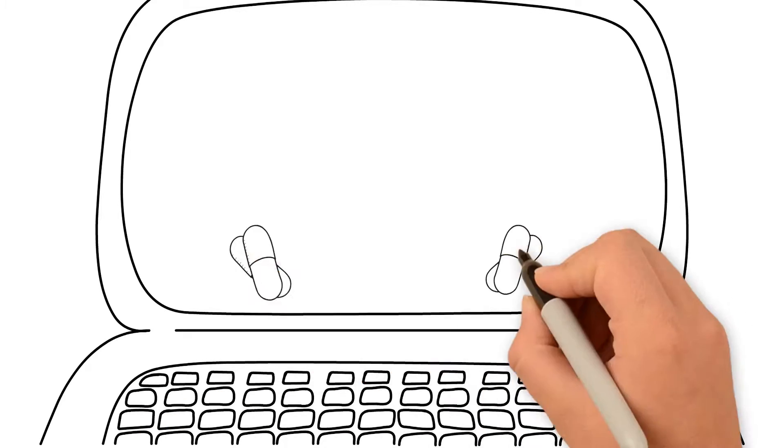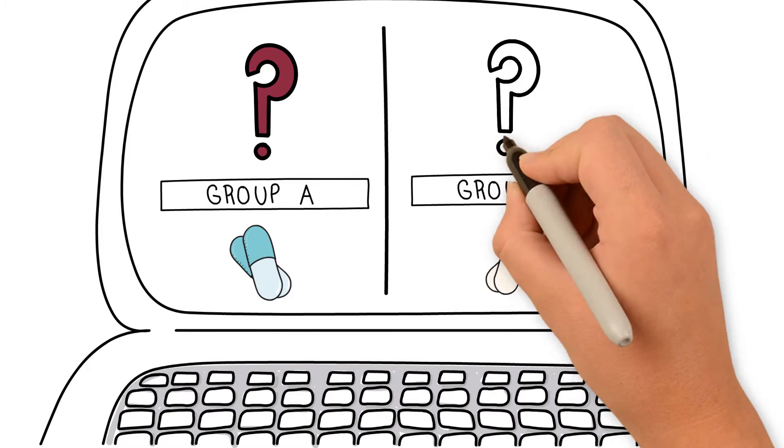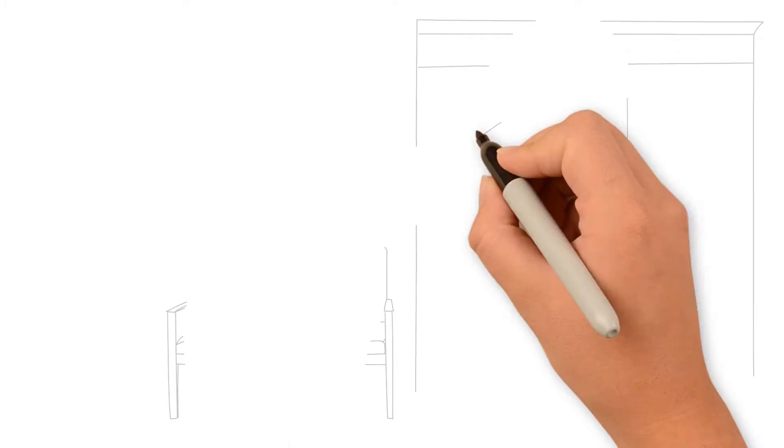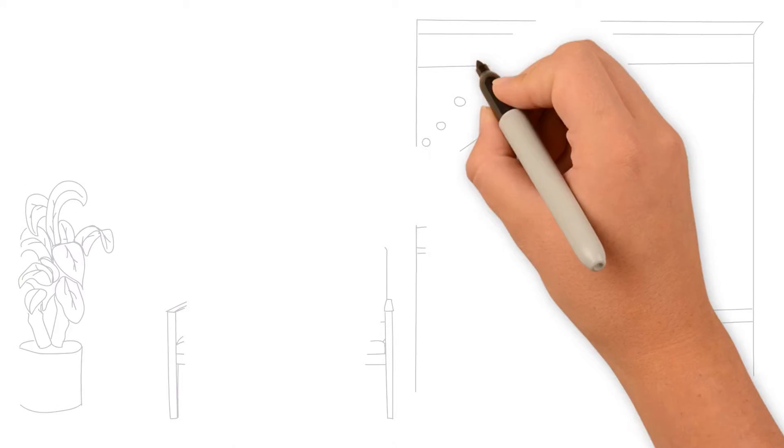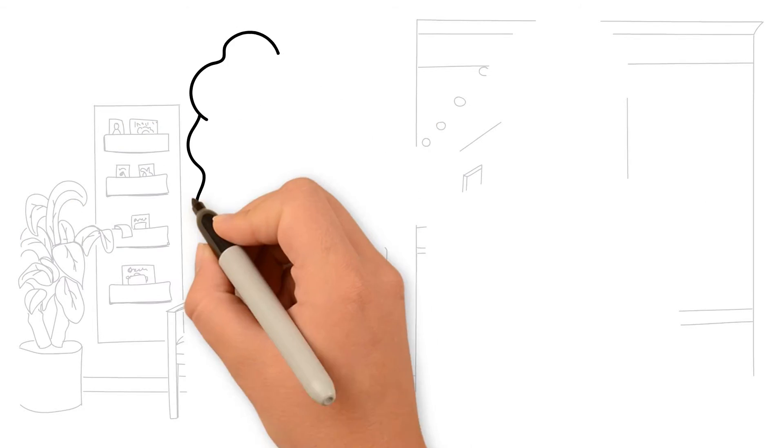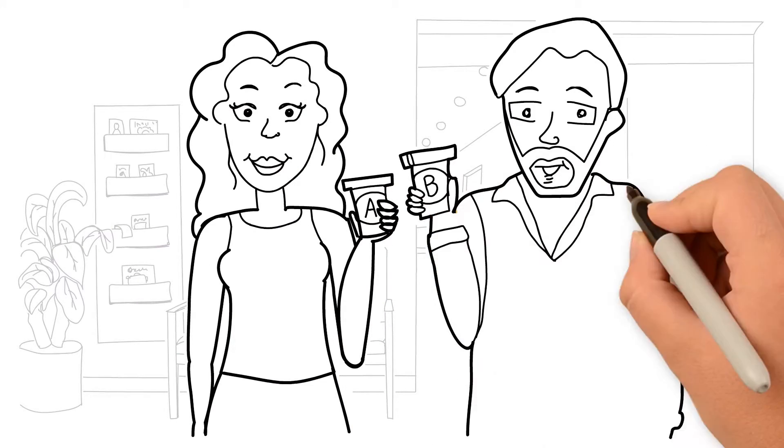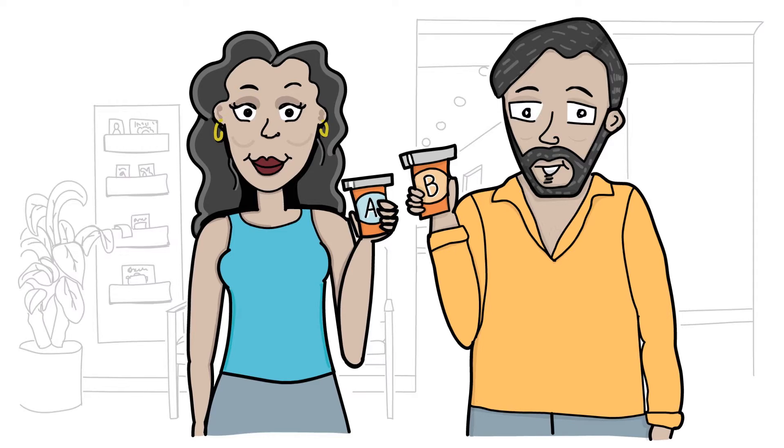When a study uses randomization, doctors will know for sure which type of treatment is the most effective once the study is over. Also, you should know that when you are offered a study that uses randomization, you'll know ahead of time what all the possible treatments are, and you may even know which treatment you'll receive in advance.